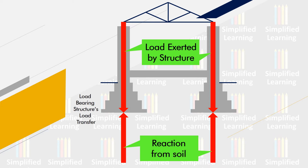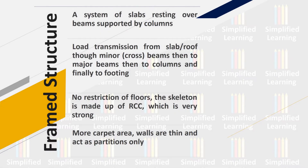Now let's see how a frame structure differs from load bearing. A frame structure is a system of slab resting over beams supported by columns, which go down below to footing, and the footing transfers all the load to the strata. Load transmission goes from slab or roof, to minor or cross beams, then to major beams, then to column, and finally to footing and hard strata. There is no restriction on number of floors, as the RCC skeleton is very strong and capable of carrying load from any number of floors.